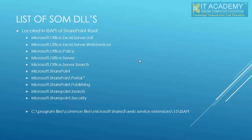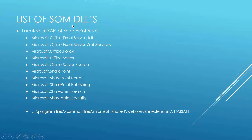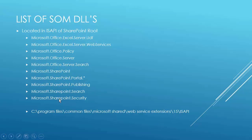In this lecture, we'll talk about the different assemblies that make up the Server Object Model. All these assemblies exist under a special folder called ISAPI, which you will normally see under your SharePoint root. The SharePoint root folder path is under Program Files, Common Files, Microsoft Shared, Web Server Extensions, under 15. One of the folders is ISAPI where you will see all these assemblies. The most essential assembly is Microsoft.SharePoint, which we take into References.